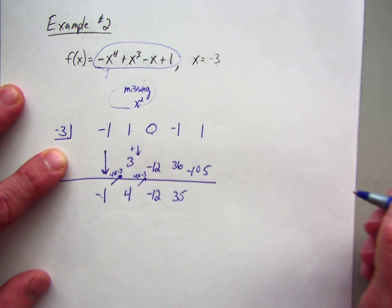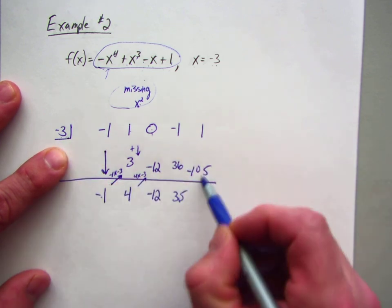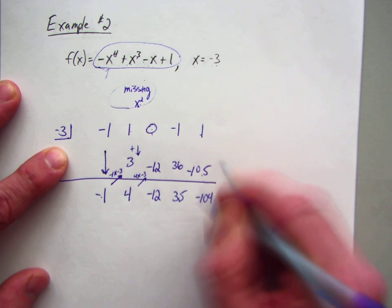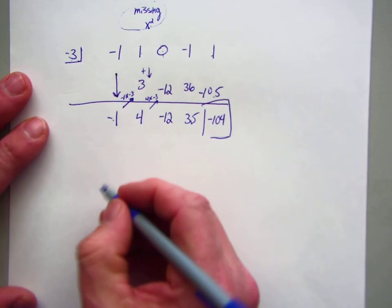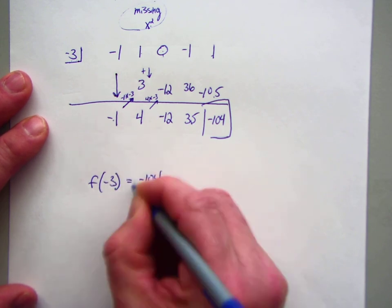And then 35 times negative 3 is negative 105. Negative 105. Because 35 times negative 3 is negative 105. I add, I get negative 104. So there's your answer. So in other words, f of negative 3 is going to equal negative 104.